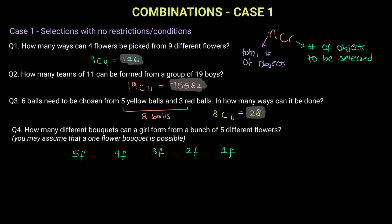So if you say this out to yourself, you are basically saying that I can form a five flower bouquet or I can form a four flower bouquet or I can form a three flower bouquet or I can form a two flower bouquet and lastly I can form a one flower bouquet.